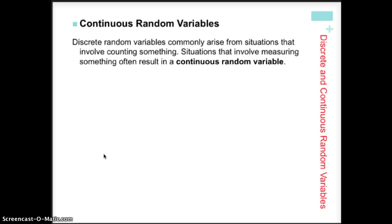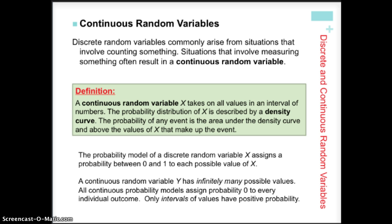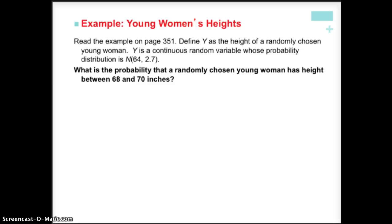Now let's talk about continuous random variables. We use density curves for those, and we have an infinite number of values — when we measure with true precision, there are an infinite number of decimal places, so that's where we use a continuous random variable. These are measured values. Let's take a look at young women's heights — pause the video to read the example on page 351. We define Y as the height of a randomly chosen young woman. Y is a continuous random variable whose probability distribution is N(64, 2.7) — normal with a mean of 64 and a standard deviation of 2.7. What's the probability that a randomly chosen woman has a height between 68 and 70 inches?